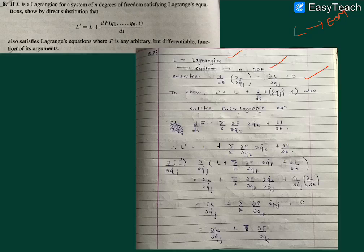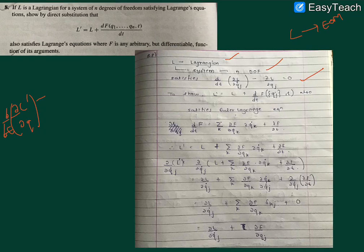Is that d/dt(∂L'/∂Q̇_j) - ∂L'/∂Q_j equals zero. This is what we have to show by direct substitution, by putting L prime in here.